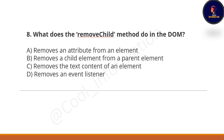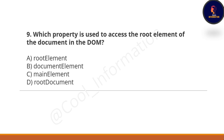Next question: What does the removeChild method do in the DOM? Option A: removes an attribute from an element. Option B: removes a child element from a parent element. Option C: removes the text content of an element. Option D: removes an event listener. The correct option is B — removeChild removes a child element from a parent element.